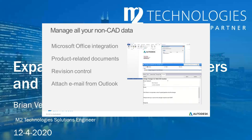In addition to design files like 3D models and drawings, a lot of product documentation is typically unmanaged — things like imagery, quotes, specifications, maintenance reports, operating manuals, and field service reports. All of this can be managed inside Vault as a single repository, with the same revision and lifecycle controls applied to these types of information across your organization.